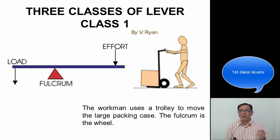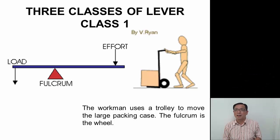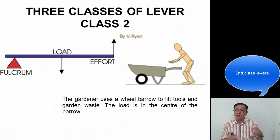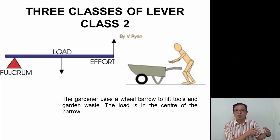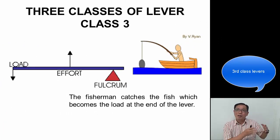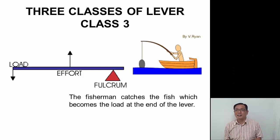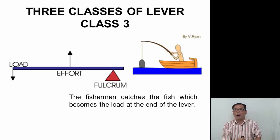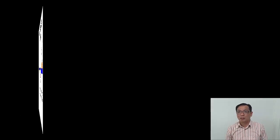There are three classes of levers. In the first class, the load is on one side, effort on the other side, and the fulcrum is in the center — for example, a workman using a trolley to move some boxes, where the fulcrum is the wheel. In the second class, the fulcrum is on one side, the load is in the center, and effort is on the other side — the wheelbarrow is a great example, where the wheel is the fulcrum, the load is carried in the center, and the workman applies effort on the other side. In the third class, the fulcrum is on one side, effort is in the center, and the load is at the end — a good example is a fisherman using a fishing rod, where his elbow is the fulcrum, the center where he pulls is the effort, and the end where the fish is represents the load.